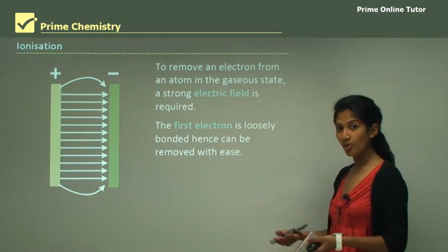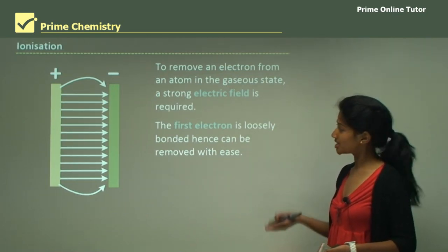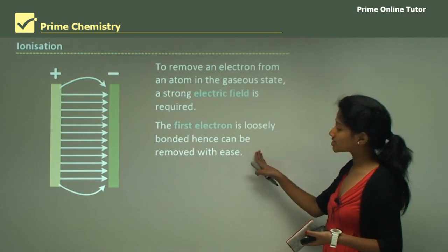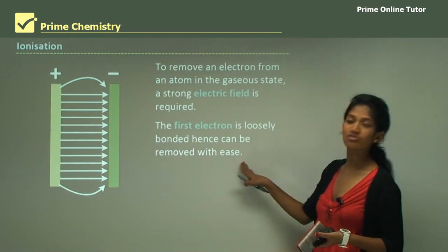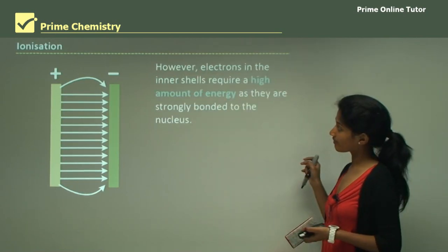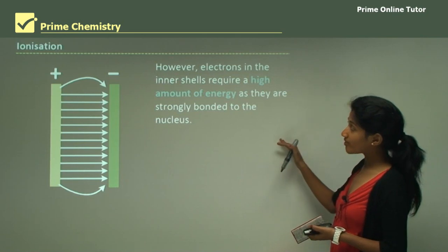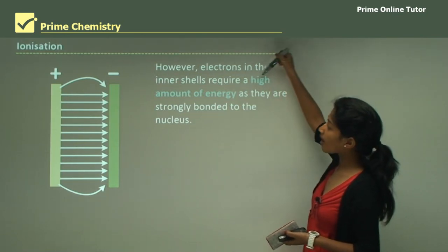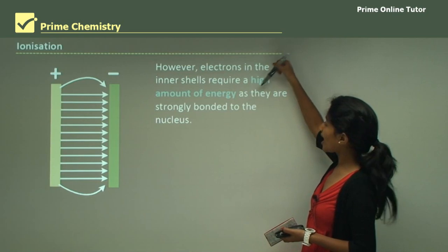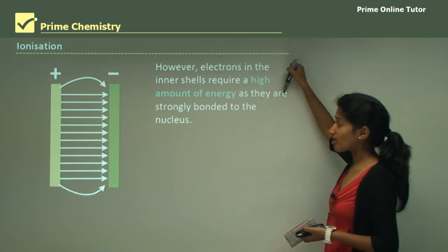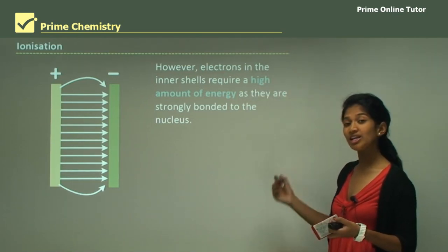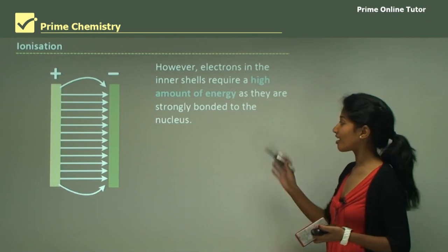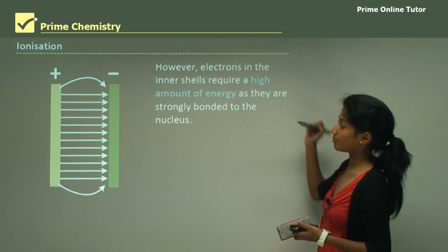The first electron is loosely bonded and there are more prioritized electrons closer in, so it is removed with ease. However, electrons in the inner shells require a high amount of energy, as they are strongly bonded to the nucleus — mainly because they are much closer to it.